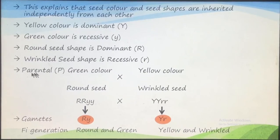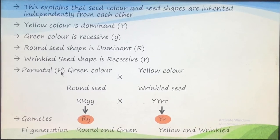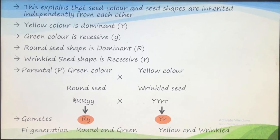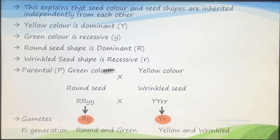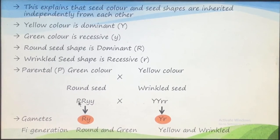In the parental generation, you can take any two characters — two dominant or two recessive — but following the textbook, one parent had green color seeds (recessive, small y small y) and round seeds (dominant, capital R capital R). So one parent had one dominant and one recessive character, but it was a pure line, meaning if these plants were allowed to self-pollinate they would keep giving the same combination generation after generation.